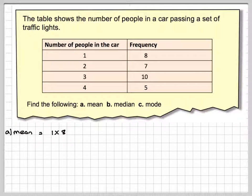So the mean is going to be, the mean is the sum of all the items, so what we need to do is 1 times 8, plus 2 times 7, plus 3 times 10, plus 4 times 5.